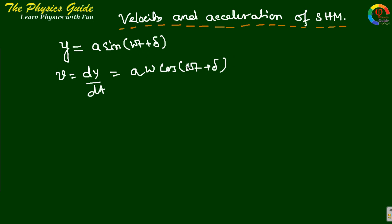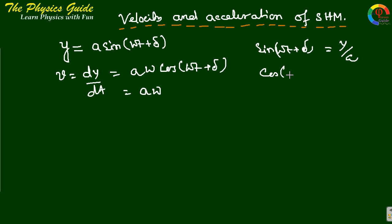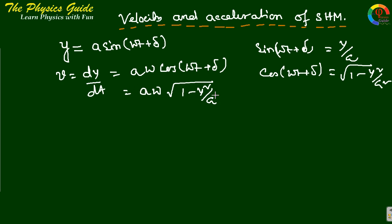This is the velocity. It can be converted: sin(ωt + δ) = y/a, so cos(ωt + δ) = √(1 − sin²(ωt + δ)) = √(1 − y²/a²). Putting this value into the equation, we get v = aω·√(1 − y²/a²).